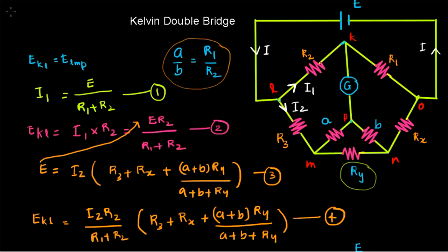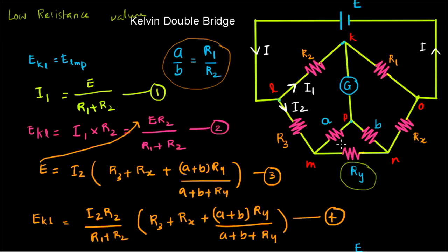We can conclude that by adding two extra arms A and B and maintaining the ratio A/B equal to R1/R2, we can avoid the effect of yoke resistance in the Kelvin double bridge and obtain very accurate results. The main application of the Kelvin double bridge is to measure low resistance values — even for a small wire we can find the resistance using this bridge. Because the connecting wires and connector resistance have no effect, the Kelvin double bridge gives very accurate results even for very small resistance values.